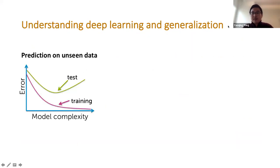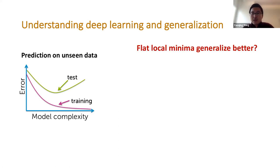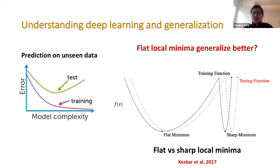Generalization means the ability to make predictions on unseen data. Deep learning generalization is actually a very complicated issue and it's hard to obtain something that is universally true. There's a famous debate on whether deep neural networks converge to a flat local minimum. The intuition usually comes from this loss landscape plot where the black curve is the training loss and the red curve is the test loss, as we optimize on this 1D loss landscape.